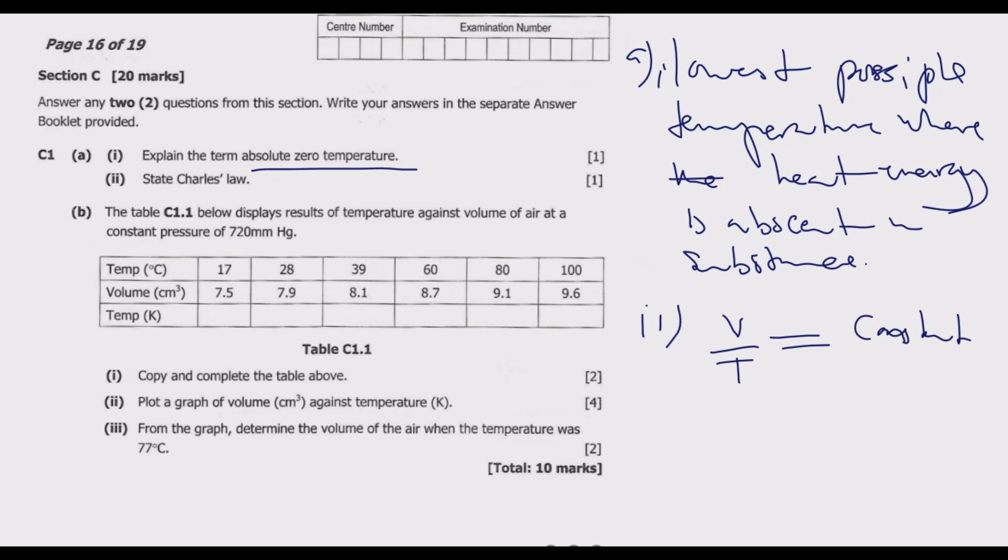So what this tells us, if this is K, volume over T equals K, then cross multiply. Volume equals a constant K multiplied by temperature T. So what this tells me is when volume increases, temperature must also increase. When volume reduces, temperature must also reduce.